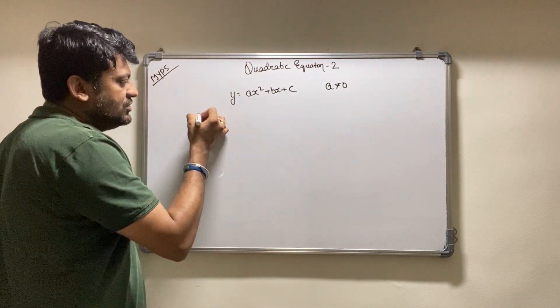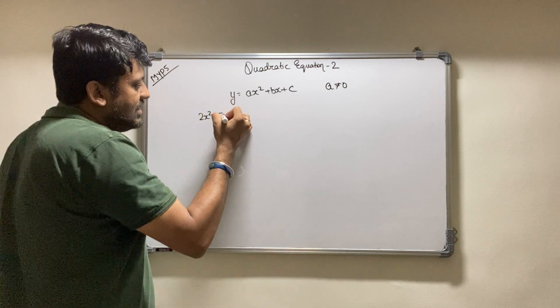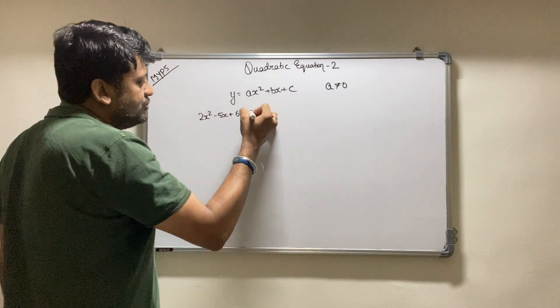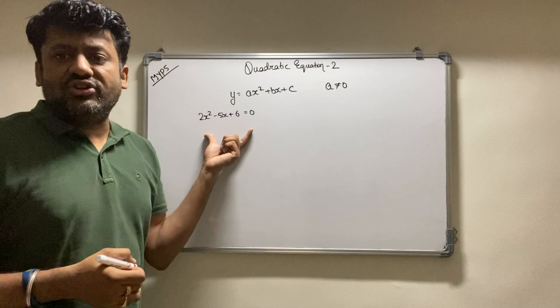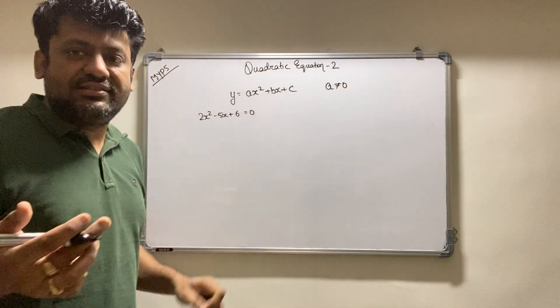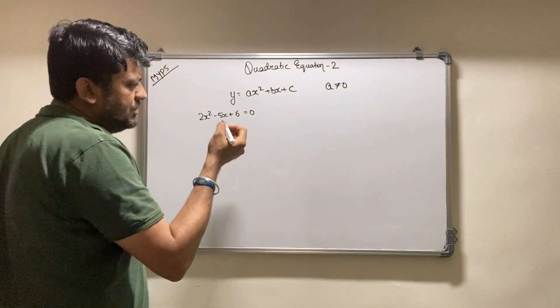Which means that if I say there is a quadratic equation, suppose 2x squared minus 5x plus 6 equals 0, is this a quadratic equation? It is. Why? Because a, b, and c are all numbers: 2, minus 5, and 6 respectively.